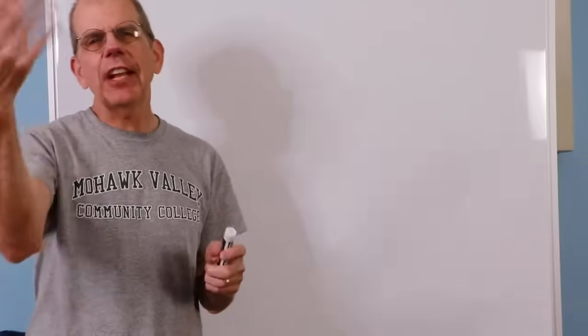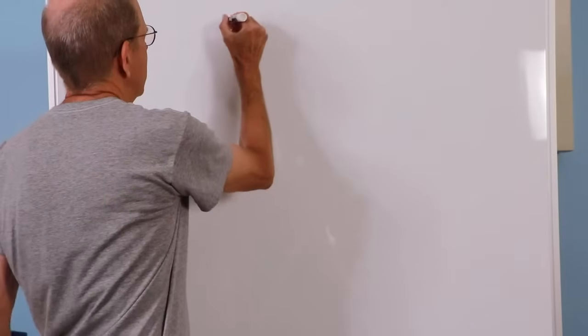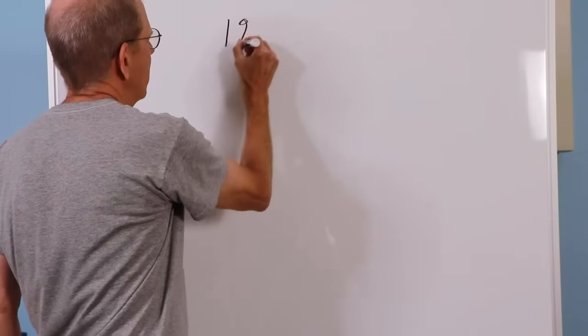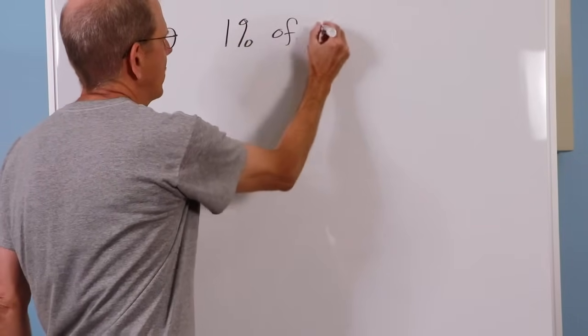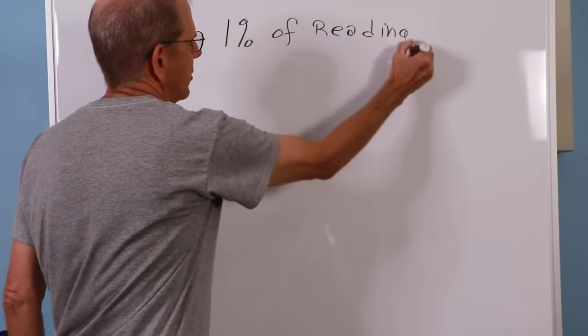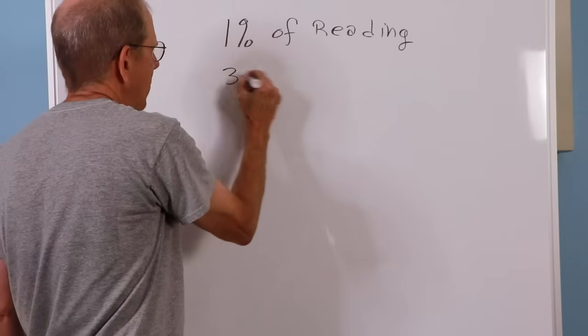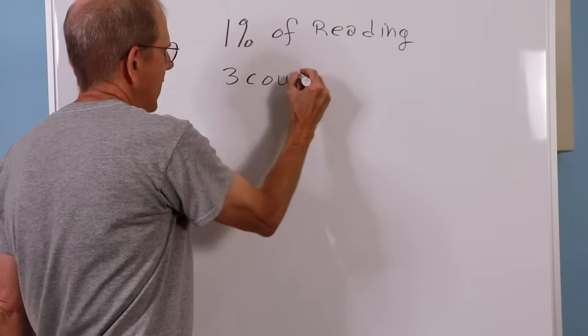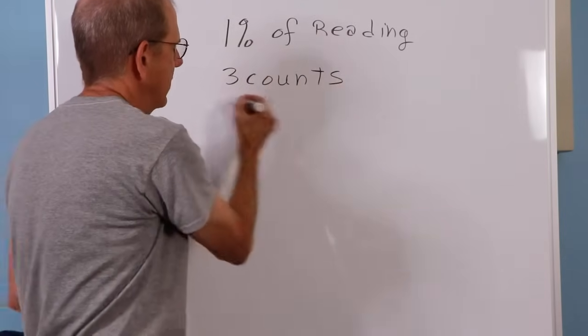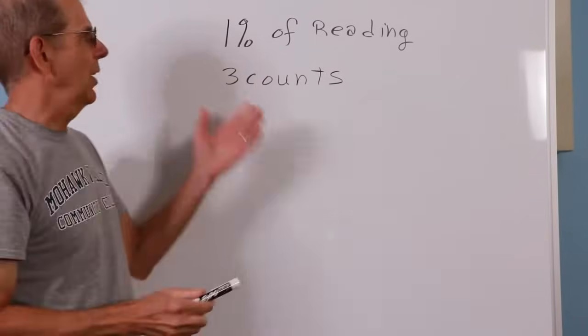And then there's a second part to this, and this is the part that usually confuses people. So it'll say maybe plus or minus 1% of the reading, now literally what the thing is printing out for you, and then it'll say maybe plus or minus 3 counts. It's the counts part that kind of throws people. What does that actually mean?